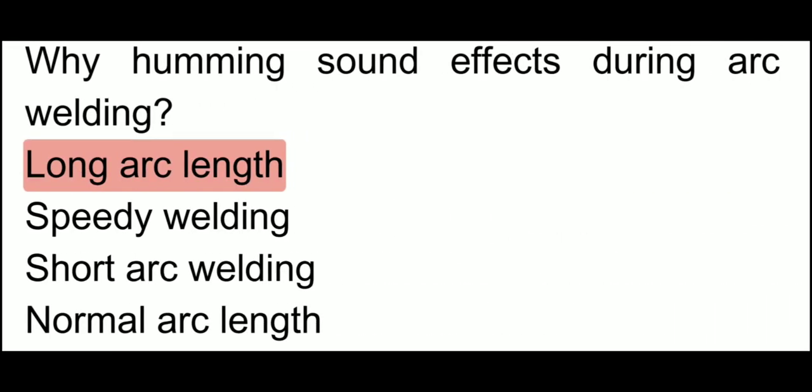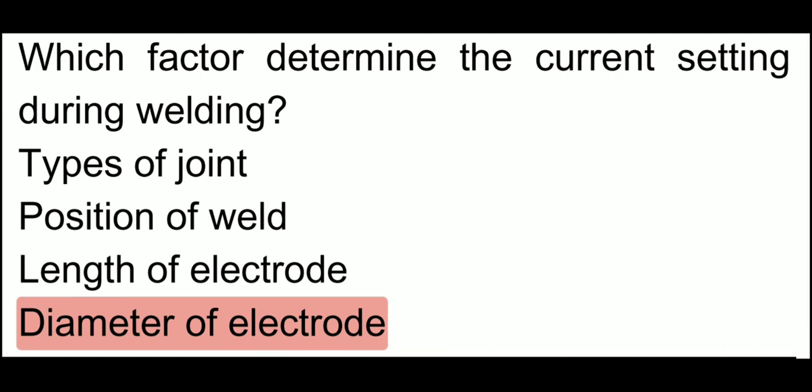Why does a humming sound occur during arc welding? Which factor determines the current setting during welding? So what is the diameter of the electrode? Based on the electrode diameter, we set the current — how much we need to keep.